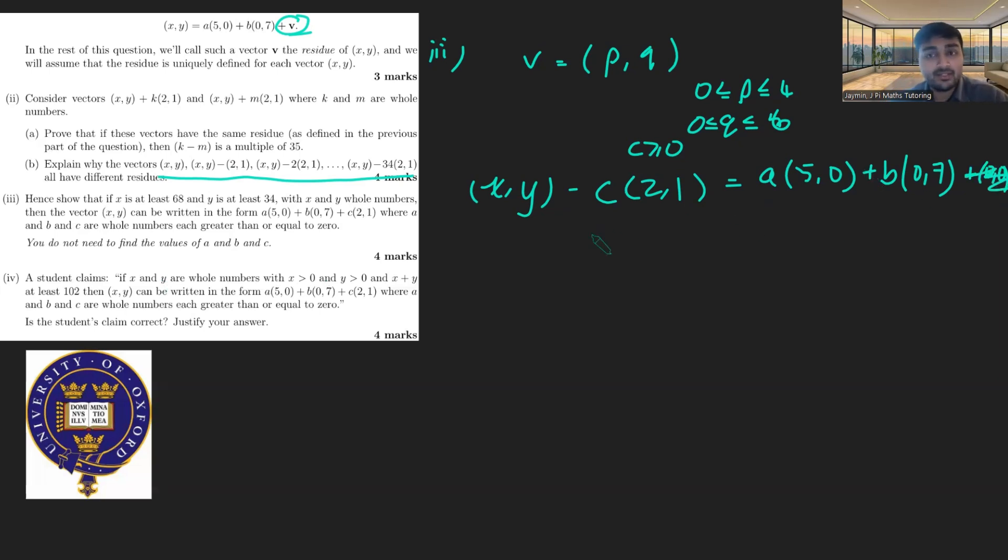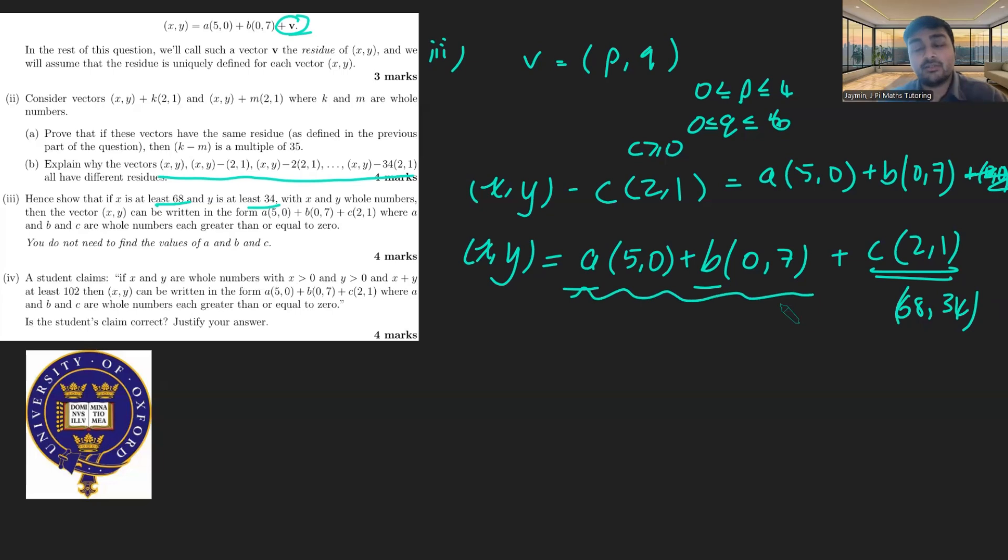And now just rearranging this, we get that (x,y) equals a times (5,0) plus b times (0,7) plus c times (2,1), like so. And now you may ask, well, where do we use the fact that x is at least 68 and y is at least 34? Well, it's basically to force a and b here to be non-negative integers. So we know that this vector here is c times (2,1), and c is at most 34. So this is at most (68,34). So therefore, these guys must contribute a positive or non-negative amount to the x and y components. So a and b must be non-negative.